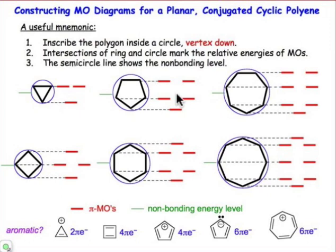So for example, a 3-atom system, we'll use a triangle. For a 4-atom system, we'll use a square, etc. What we want to do is take that polygon and place it with one vertex down. So in each of these, you can see that we've positioned a vertex at the very bottom.